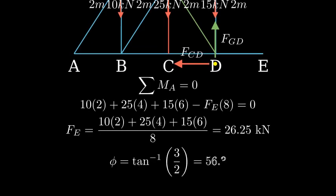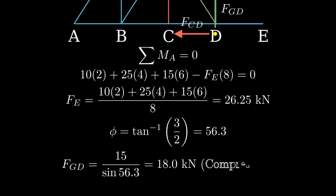The angle phi is found using inverse tangent of 3 over 2, which gives us 56.3 degrees. Using vertical force equilibrium at joint D, we find that the force in member GD is 18 kilonewtons in compression.